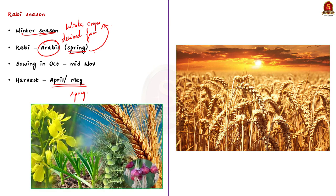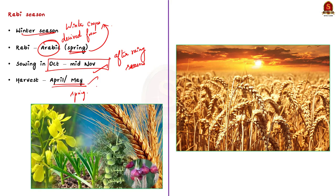Normally, Rabi crops are planted around October or the middle of November. This is well after the rainy season, that is after the monsoon rains are over. So the sowing is done in winter season, but the harvesting is done in April or May, depending on the type of crops.